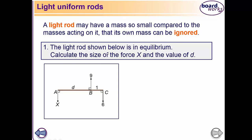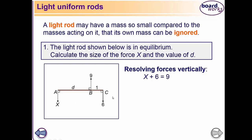The light rod shown is in equilibrium. Calculate the size of the force x and the value of d. There are forces acting on it: point A has force x, and point B has force 9. The distance of B is 1 and the distance from A is d. We will now consider the vertical forces.